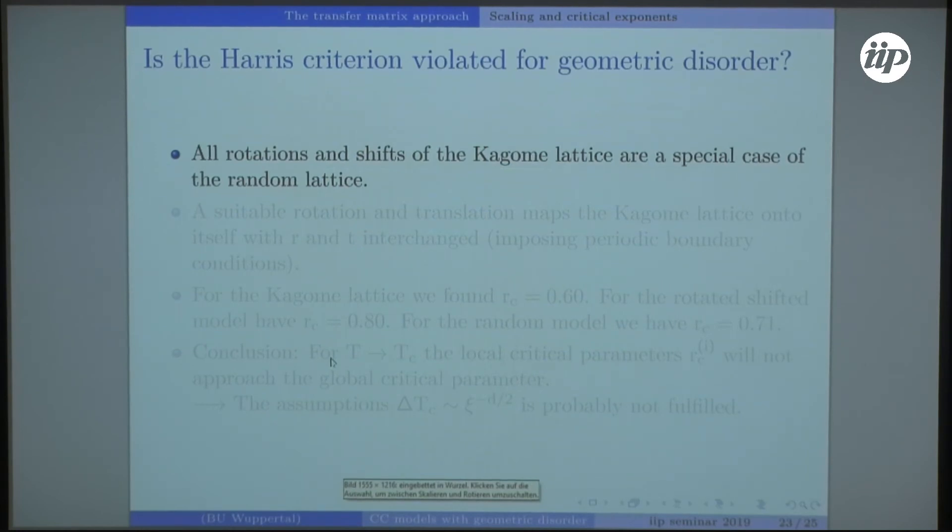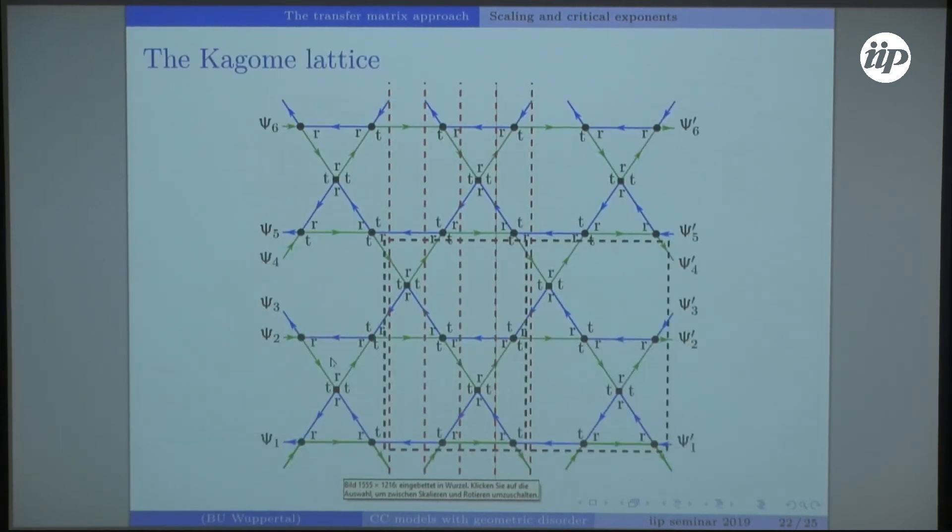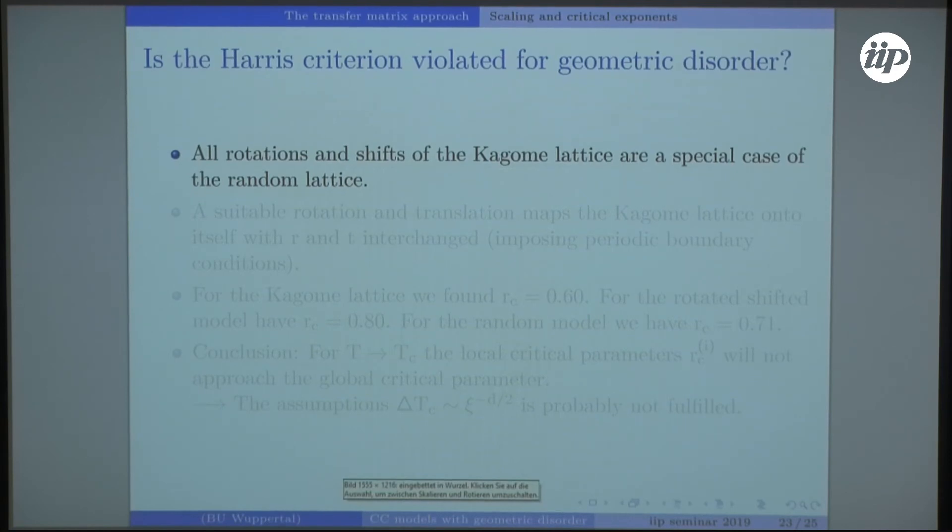This is the Kagome lattice and it is some special realization of the random network model. Imagine we have one patch that realizes the Kagome lattice and another one might reflect any rotation or translation of the Kagome lattice. There is a special one which maps the Kagome lattice unto itself where just R and T are reversed. We have analyzed the Kagome lattice and found that the critical reflection would be at 2.6. For the rotated and shifted one we therefore also know it, which would be 0.8. For the random model in total, for x equals 0, we have R critical about 0.7.